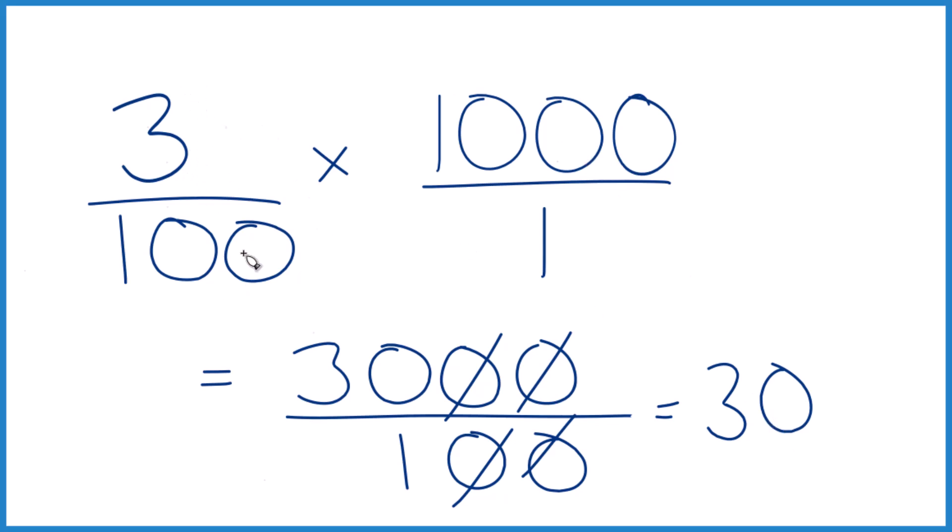You could also take three divided by 100. You get 0.03 and multiply that by 1,000. You can get 30 again. This is Dr. B. Thanks for watchin'.